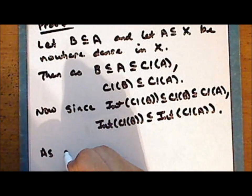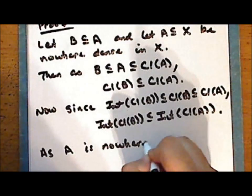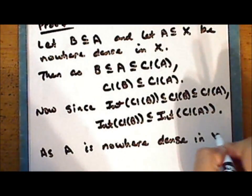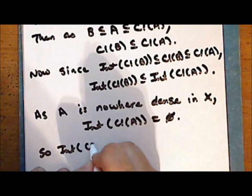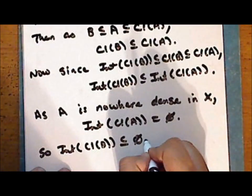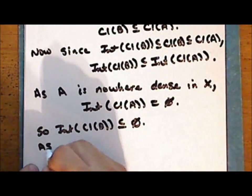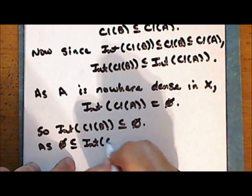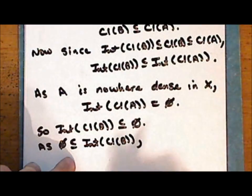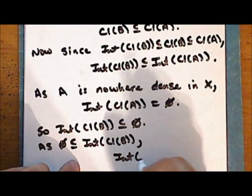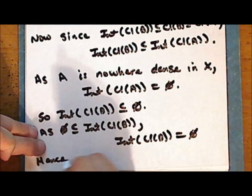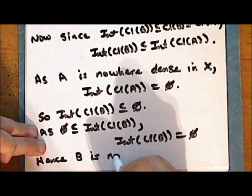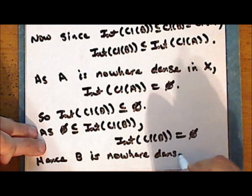Now as the set A is nowhere dense in the space X, we have that the interior of the closure of B is a subset of the empty set. And as the empty set is a subset of any given set — in this case the interior of the closure of the set B — we now have set inclusion in both directions, so that the interior of the closure of B is empty, and hence the set B is nowhere dense in the space X.